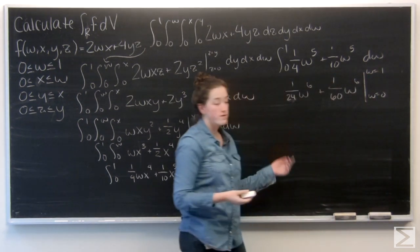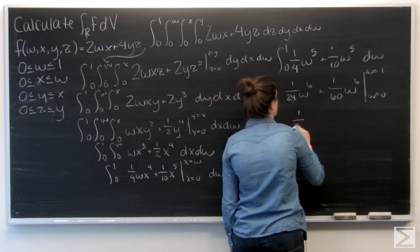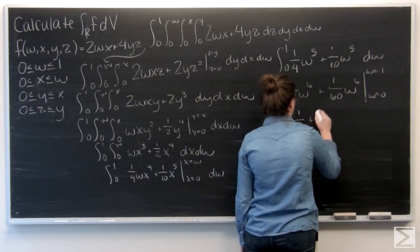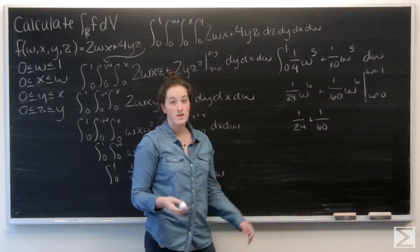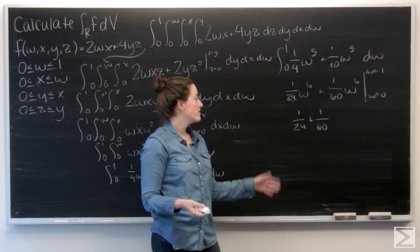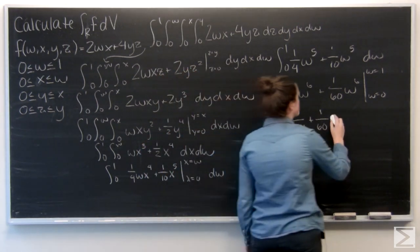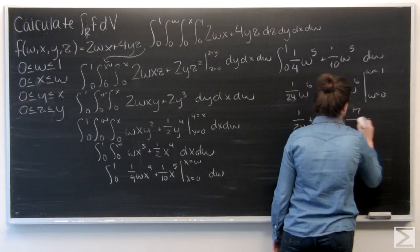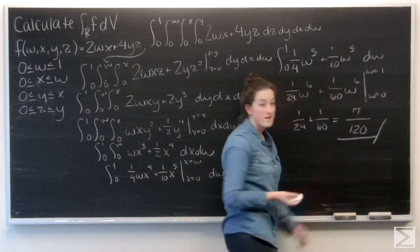Okay, so first off, plug a 1 everywhere I see a w. So 1 twenty fourth plus 1 sixtieth. And then for plugging in 0 for w, everything just becomes 0. So add these, I'm going to get 7 over 120. And that's my final answer.